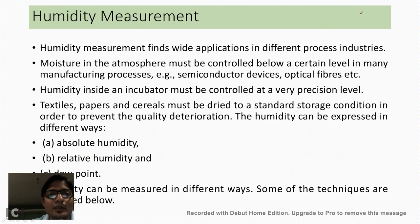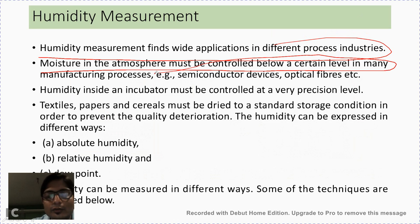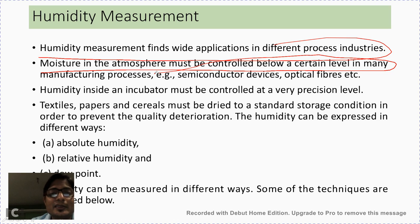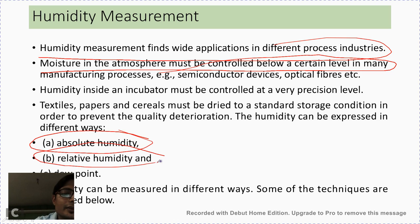Next is humidity measurement, which finds wide application in different process industries. Moisture in the atmosphere must be controlled below a certain level. For example, when preserving food grains we need to dry them in the sun to reduce humidity — if left in a humid environment, cereals and grains will be destroyed by fungus. Likewise most industrial processes can suffer deterioration due to humidity, so it is essential to control and measure it. Humidity can be expressed in different ways: absolute humidity, relative humidity, and dew point.